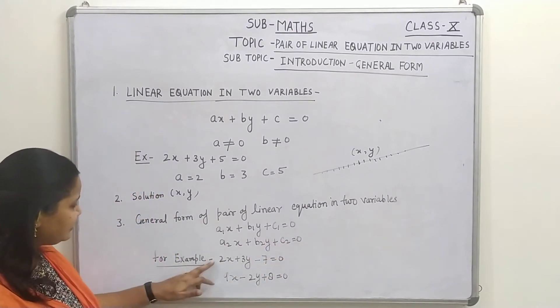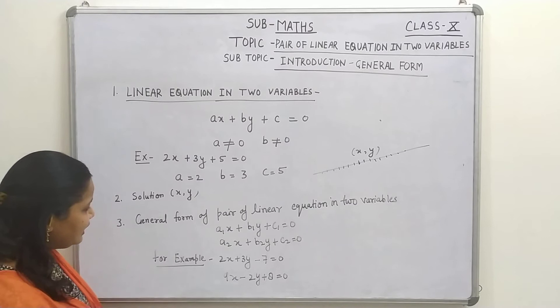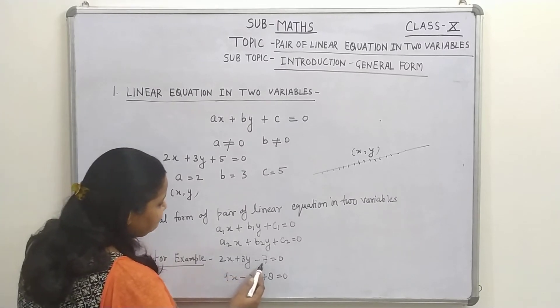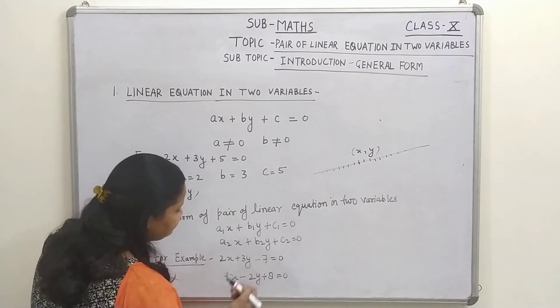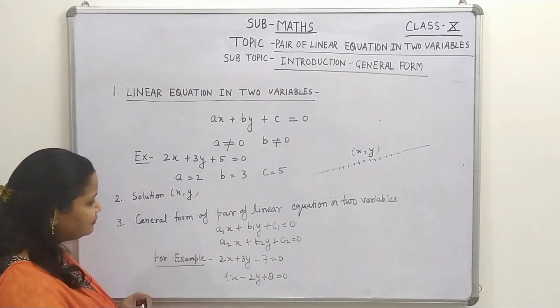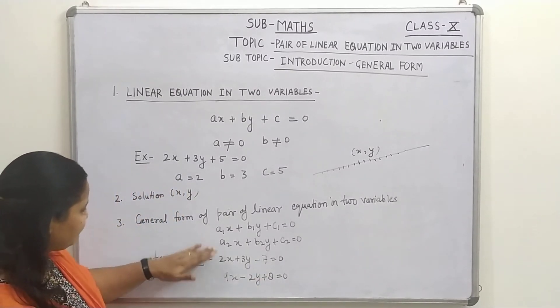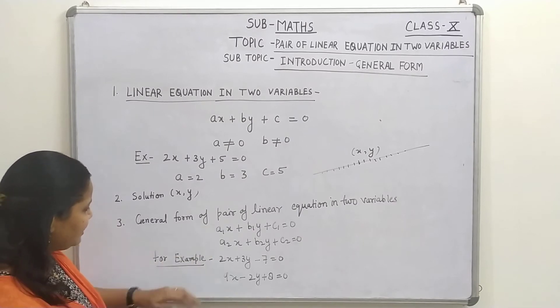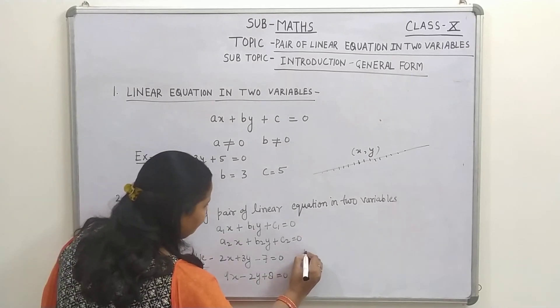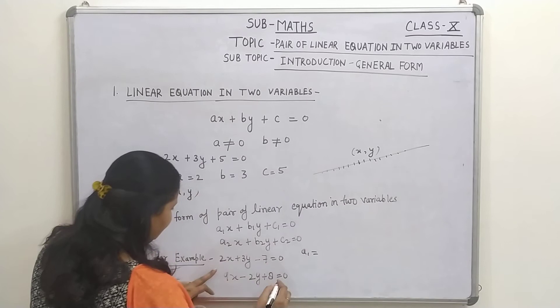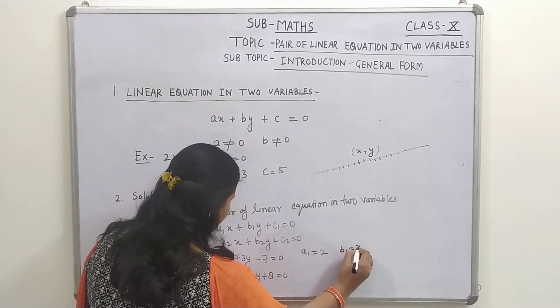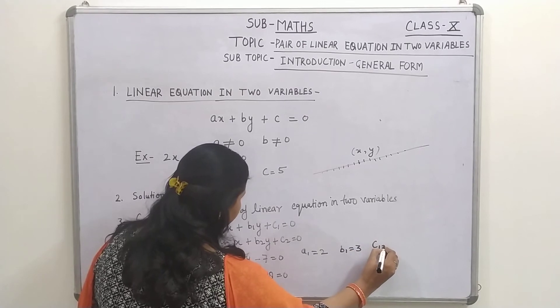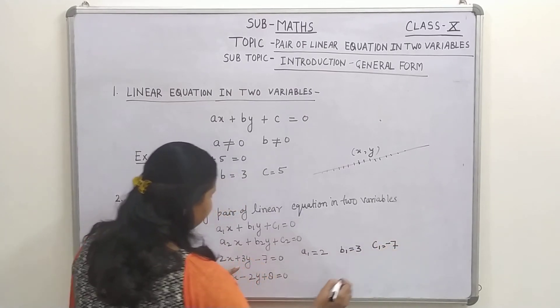So, for example, if I have two equations like 2X plus 3Y minus 7 equals to 0 or 9X minus 2Y plus 8 equals to 0. So, you can see, if we compare it with the general form, here, A1 equals to 2, B1 equals to 3 and C1 equals to minus 7.